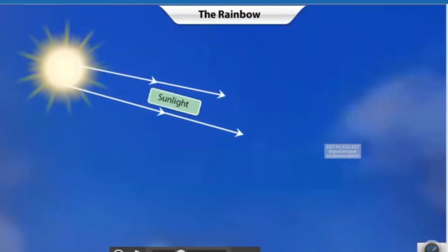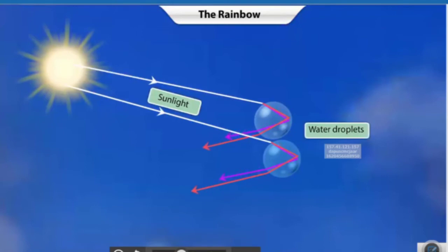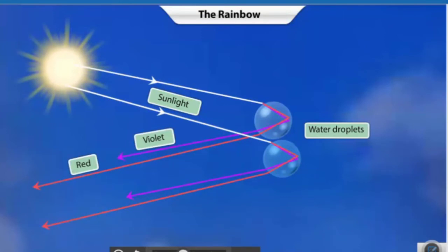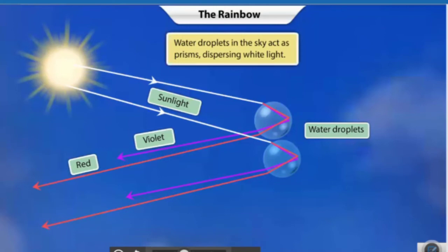Sunlight bends as it enters the droplets in the air. The droplets reflect off the sunlight internally and refract the light again as it moves out into the air. In this way, each water droplet acts as a prism and disperses sunlight.